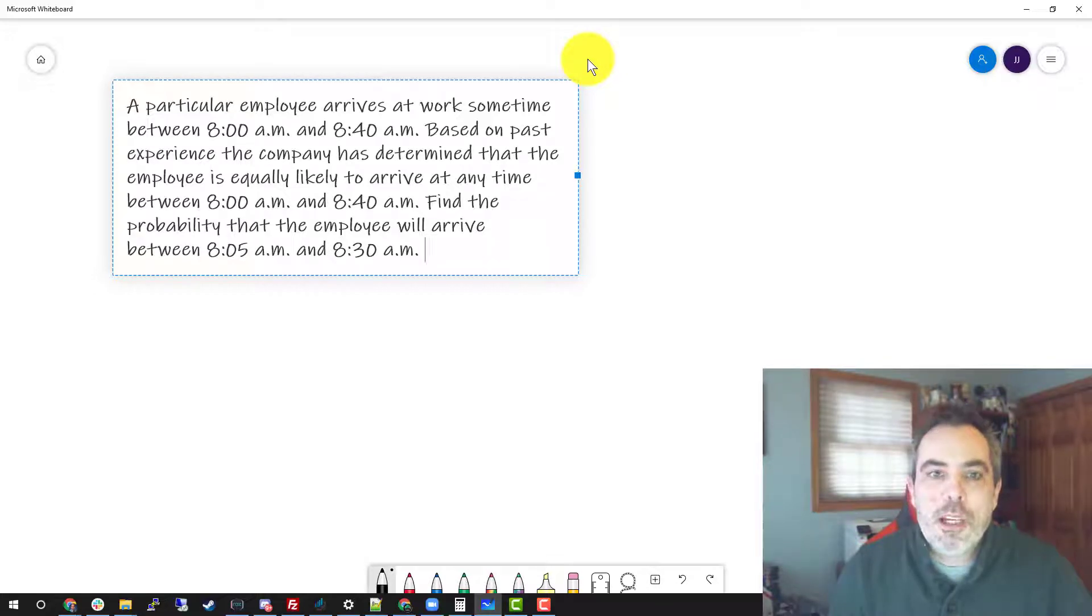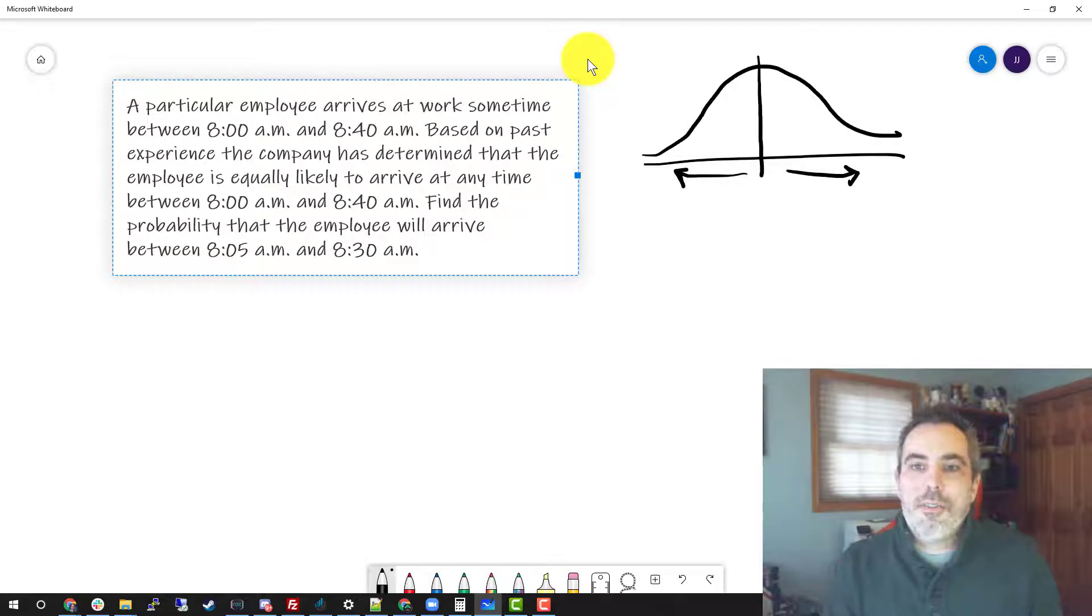Remember, when we're talking about a distribution, typically we've seen this picture of a normal distribution quite often in this class, where we're saying here is the average and things are distributed both to the left and to the right. The normal distribution looks like this bell shaped curve.